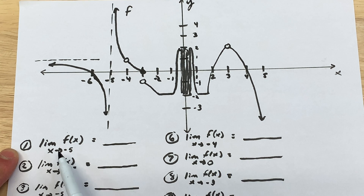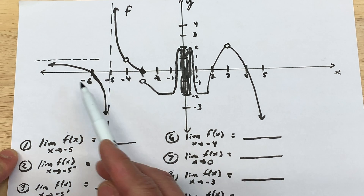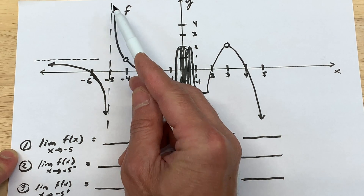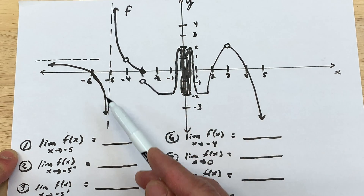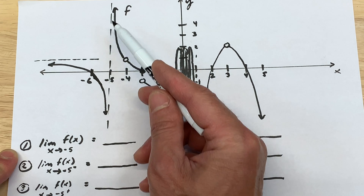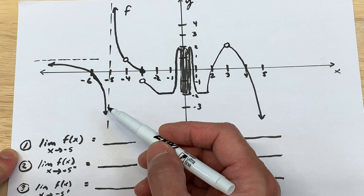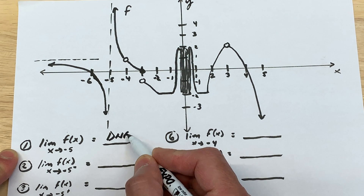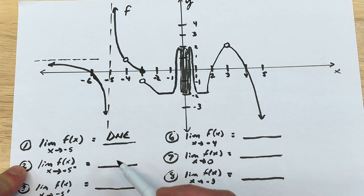Number one: the limit as x approaches negative 5 of f(x). When we look at negative 5 on our graph, approaching from the left side goes down towards negative infinity, and approaching from the right side goes up towards positive infinity. There's an infinite gap — what's called a non-removable discontinuity, specifically an infinite discontinuity. So the limit does not exist. You can say it's an infinite discontinuity or that it's unbounded.